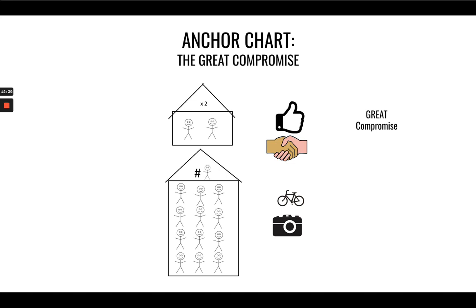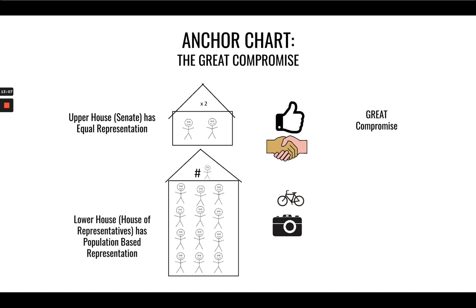Your anchor chart for the Great Compromise: the upper house is the Senate and has equal representation — remember, the Senate is there to make small states happy. Both 'Senate' and 'small' start with the letter S: small states, Senate, equal representation. The lower house, the House of Representatives, has population-based representation. The Great Compromise created a bicameral, two-house legislature.